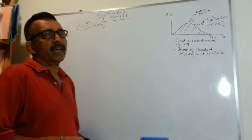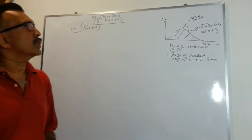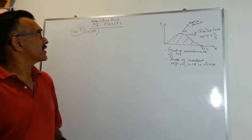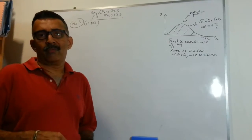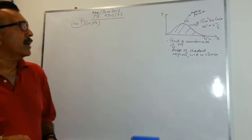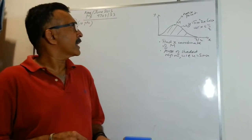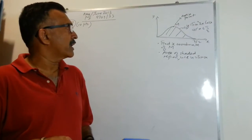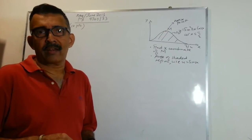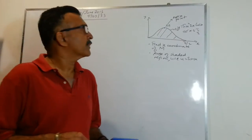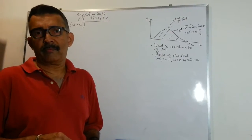Hi, we are looking at one of the questions that appeared on the May-June 2013, 9709-33 Pure Maths paper 3, and it's question number 9. We are going to go through the solution. We are given a curve y equals 2 sin squared 2x cos x. They have indicated a maximum point M, and they have told us that x is between 0 and pi over 2. We are only considering that part of the curve. In the first part of the problem, we are asked to find the x coordinate of M.